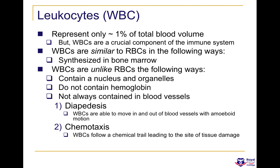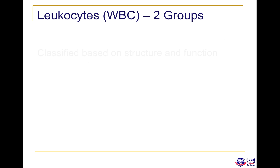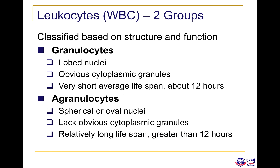Leukocytes represent only 1% of the total blood volume. Unlike red blood cells, white blood cells contain a nucleus and organelles, do not have hemoglobin, and are able to perform diapedesis — crawling along and out of blood vessels to a site of injury. They can also carry out chemotaxis, following a chemical trail leading to the site of tissue damage. Leukocytes are classified into two groups: granulocytes and agranulocytes.